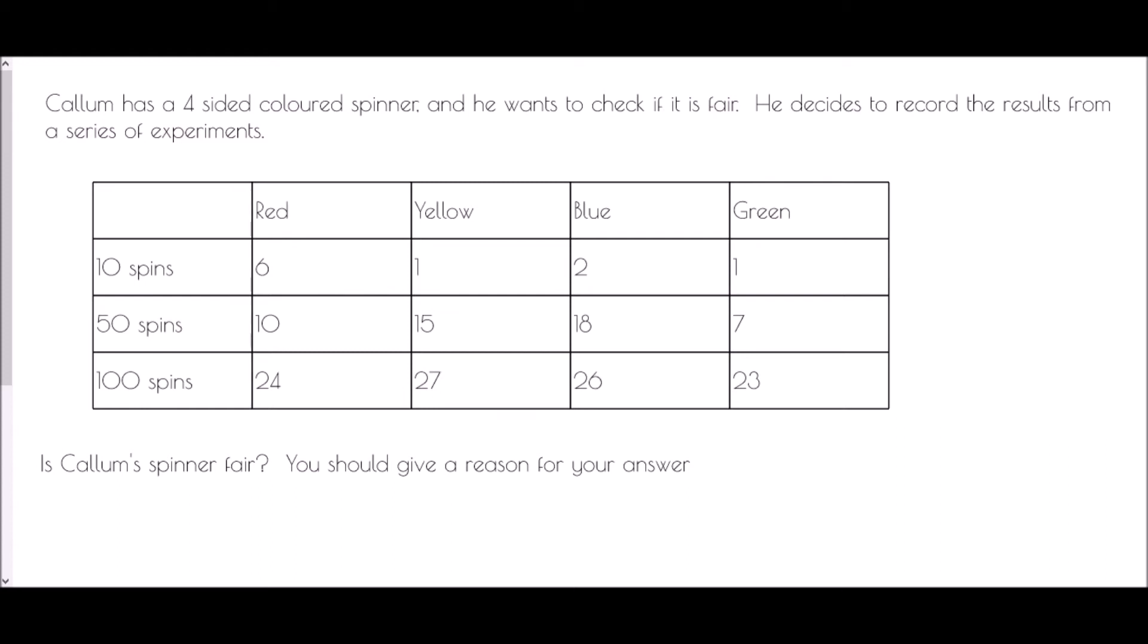And we've been asked, is Callum's spinner fair? Give a reason for your answer. Now if we had a look at the very first set of information - at 10 spins we've got 6, 1, 2, and 1. Now if this was a fair spinner, we would expect to get a similar number of reds, yellows, blues, and greens in our experiment. At the moment with 10 spins, we have far more red coming out than any other color, and so it would suggest that right now it is not that fair.